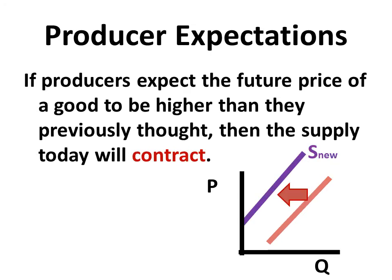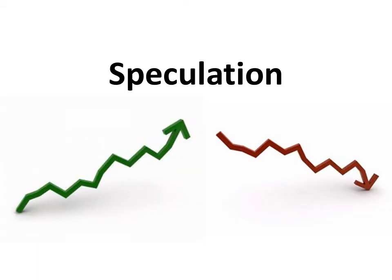The reverse happens as well. If producers expect the future price of a good to be higher than they previously thought, then the supply curve today will actually contract, because they'll hold off selling it today and wait to sell it in the future when they can get that higher price. This is typically what we think of as speculation.